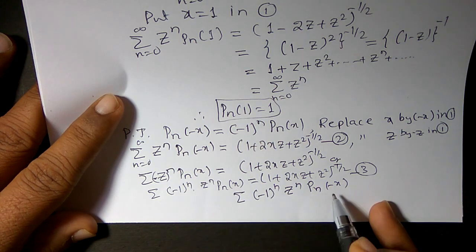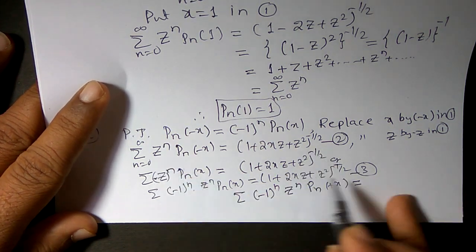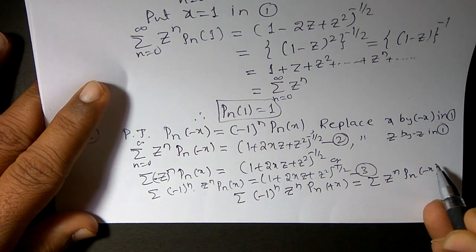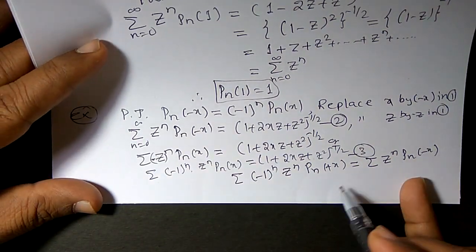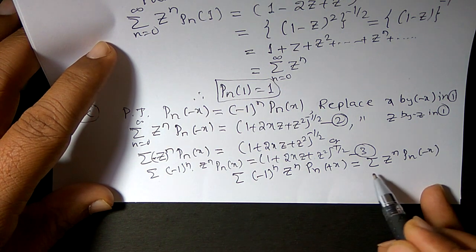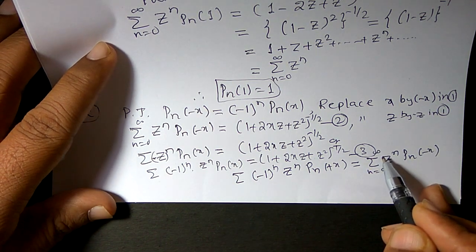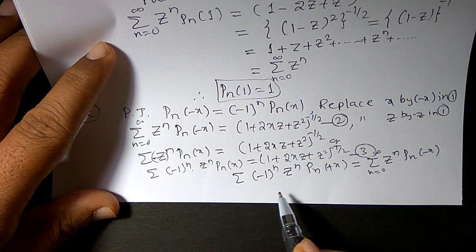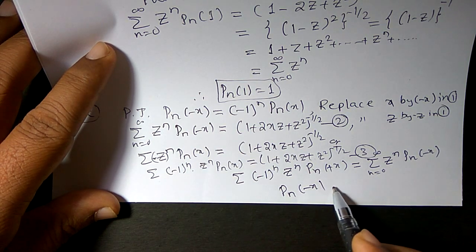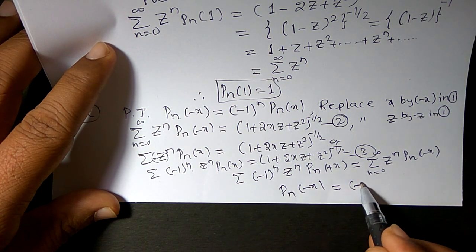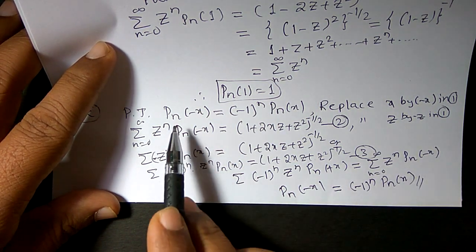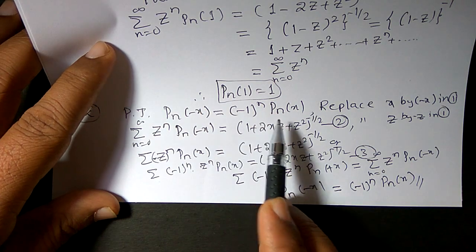Observe equations 2 and 3 — the right hand sides are the same. So we can write summation of (-1)^n * z^n * P_n(x) equals summation of z^n * P_n(-x). Now equating the coefficients of z^n on both sides, P_n(-x) = (-1)^n * P_n(x). This is the required answer.